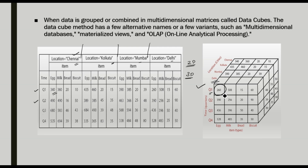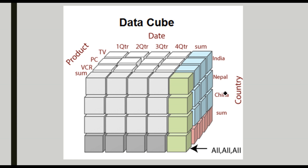When we make data cubes, it becomes very easy to analyze and view the dataset for analysis purposes. Here is an enlarged picture of a data cube. In this example, the dimensions are products (VCR, PC, TV), time (quarter 1, quarter 2, quarter 3, quarter 4 plus a sum), and countries (India, Nepal, China plus a sum). Picking a particular portion of this data cube, we can identify the sum of all products — TV, PC, and VCR — for quarter one in the country India. This makes it easy to identify summaries of our datasets when viewing them as a data cube.